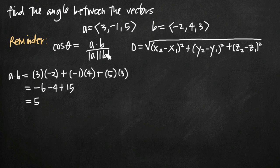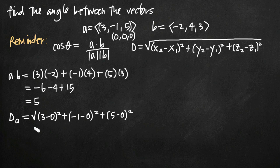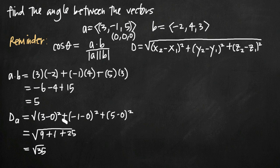Now we need to find the length of a and the length of b using the distance formula. We have the coordinate point for a and the origin, so the distance of vector a equals the square root of three squared plus negative one squared plus five squared. Simplifying, three squared is 9, negative one squared is 1, and five squared is 25. So the length of vector a is the square root of 35.